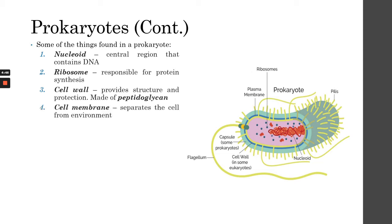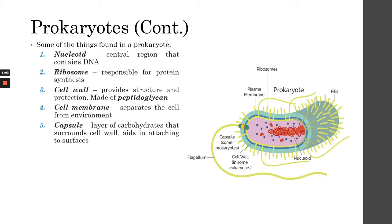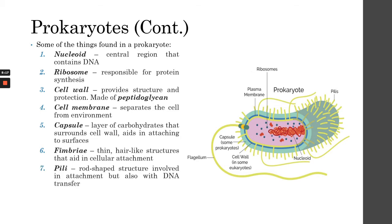Prokaryotes have a cell membrane that separates the cell from the environment. Unlike prokaryotes, our human cells do not have cell walls. Some prokaryotes also have a capsule, which is a layer of carbohydrates surrounding the cell wall that aids in attaching to surfaces. Fimbriae are hair-like structures that also help prokaryotes attach to surfaces. Pili are another structure involved in attaching to other cells and transferring DNA. Finally, flagella help prokaryotes move, acting like a tail for locomotion.